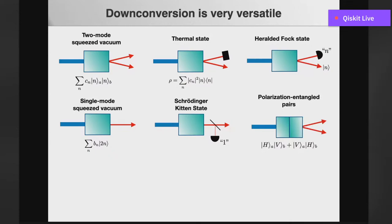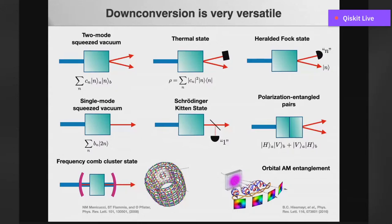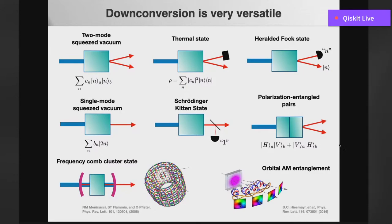Sending the squeezed vacuum state through a weakly reflecting beam splitter and conditioning on detection of a photon in the reflected mode gives a Schrödinger kitten state — a small-amplitude Schrödinger cat state. Another thing you can do is take two small slices of downconversion crystal, rotate them and piece them together; with the right pump polarization and slices shorter than the photon coherence length, you can create a polarization-entangled Bell pair — the workhorse of quantum optics experiments for the last 20 years, used in the Bell experiments. You can also put one inside a cavity to create frequency-comb entangled states or cluster states, universal for measurement-based quantum computing.